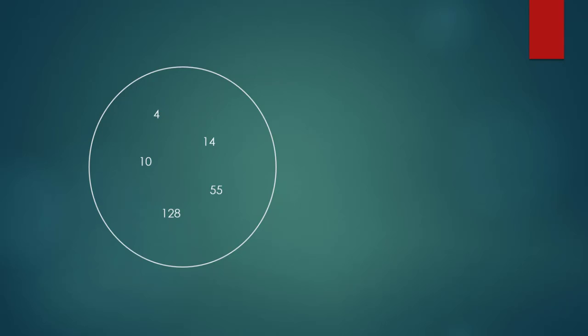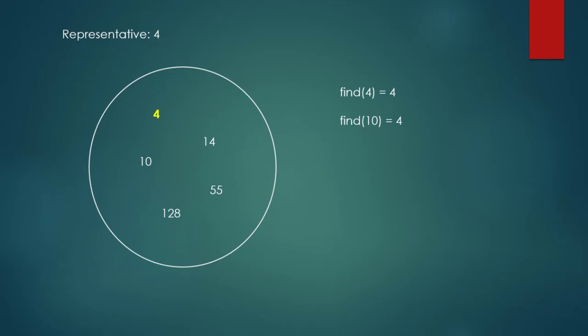For example, we have a disjoint set with items 4, 10, 14, 128, 55. The representative of the disjoint set is 4. If we run find on 4, it returns 4. If we find 10, it returns 4. If we find 55, it also returns 4 — disjoint sets always return the representative.